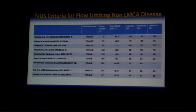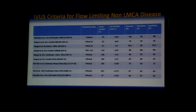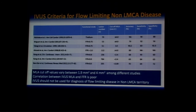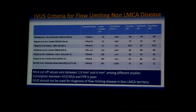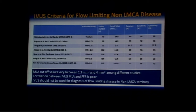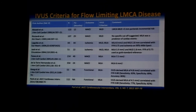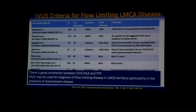We shall start with assessment of intermediate lesion significance. In the non-LMCA territory, the IVUS MLA cutoff values vary between 1.9 mm² to 4 mm² among different studies. There is a poor correlation between IVUS MLA and FFR, with very low overall accuracy. Hence, IVUS should not be used in diagnosing flow-limiting disease in the non-LMCA territory. In contrast, in the LMCA territory, the correlation between IVUS MLA and FFR is excellent, so you can use IVUS in the diagnosis of flow-limiting disease in the LMCA territory.